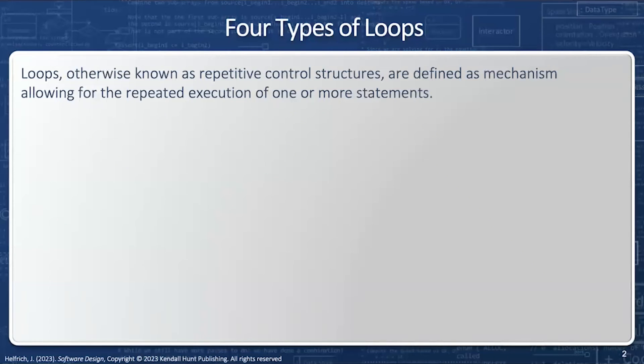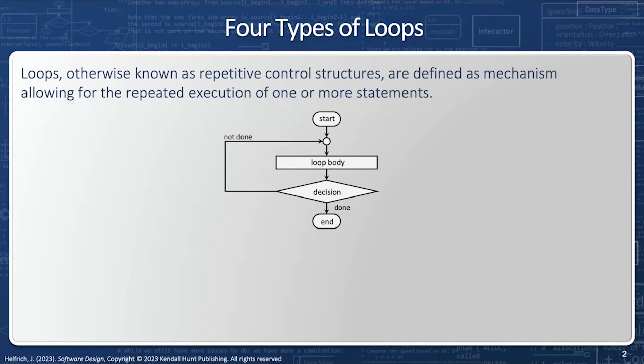Loops, otherwise known as repetitive control structures, are defined as mechanisms allowing for the repeated execution of one or more statements. In a flowchart, we can always see there's a loop because there's an arrow that moves back upstream, back up so we execute the same body more than once.